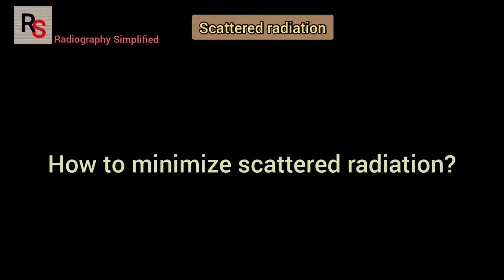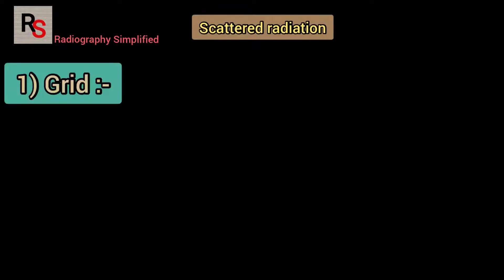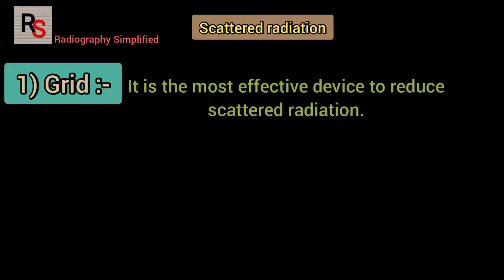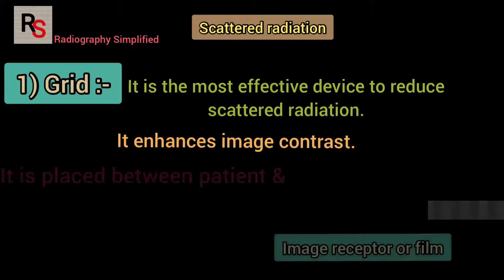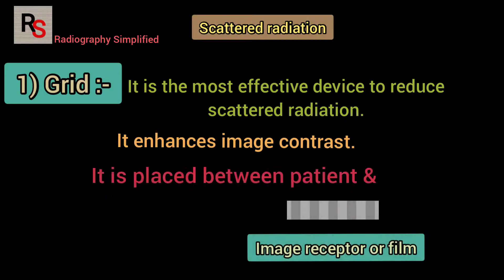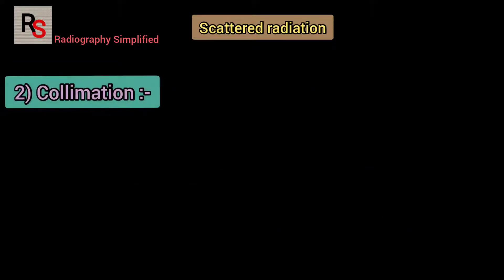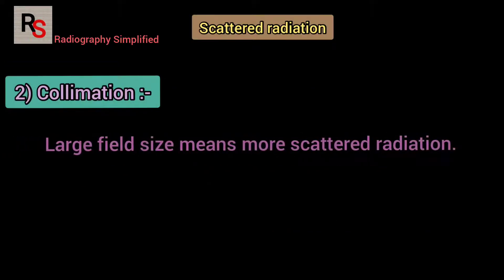To minimize scattered radiation, a grid is the most effective device to remove scattered radiation reaching the image receptor, and therefore enhances image contrast. It is placed between the patient and the image receptor.